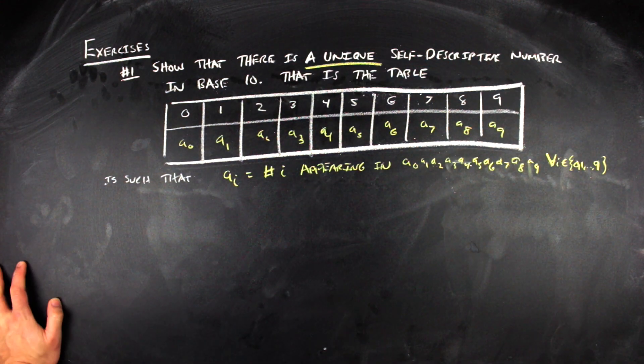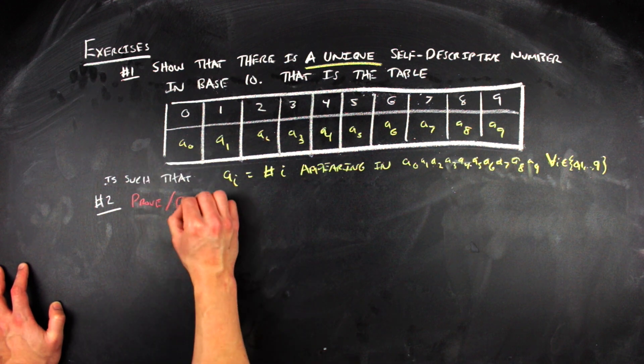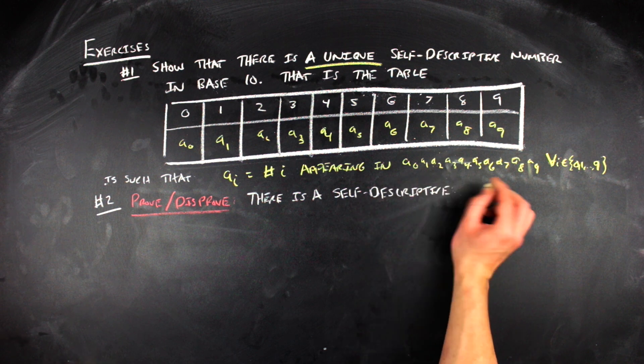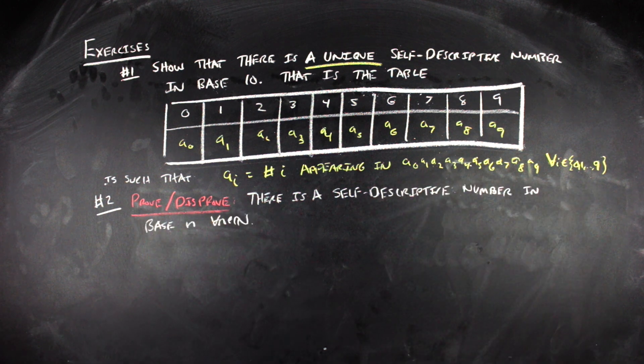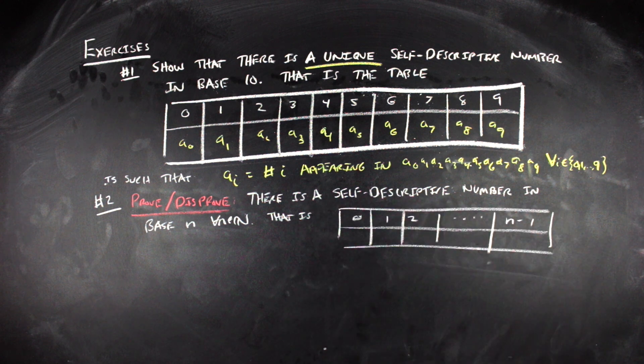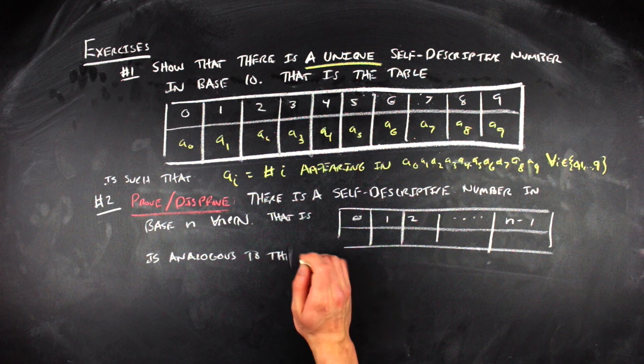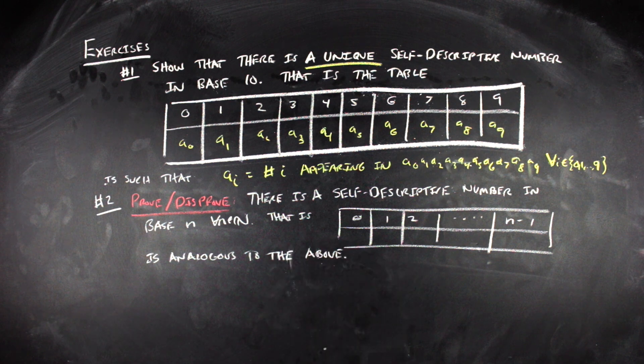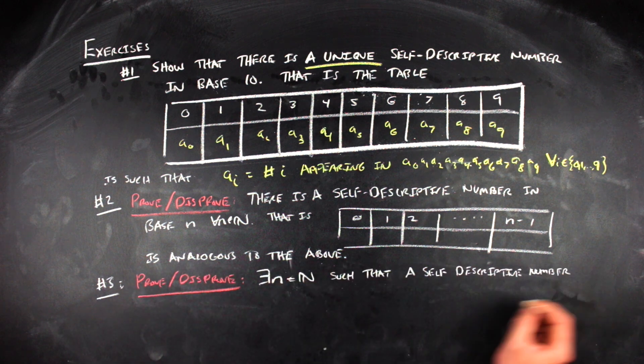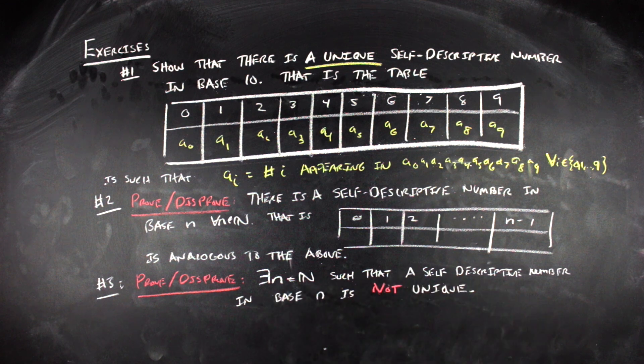The second one is, I don't think I've seen people talk about, but it's not super crazy. It just sounds kind of crazy at the outset. So it's just prove or disprove that there is a self-descriptive number for any given base n where n is greater than or equal to two. And then the last problem here is to go ahead and prove or disprove that there is an n within the naturals such that in base n, a self-descriptive number is not unique.